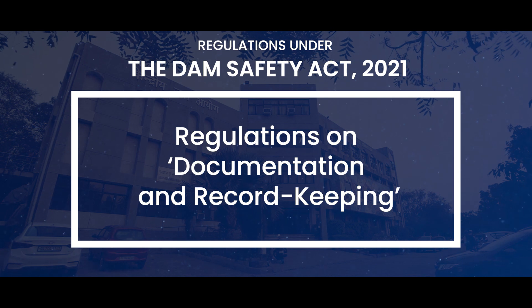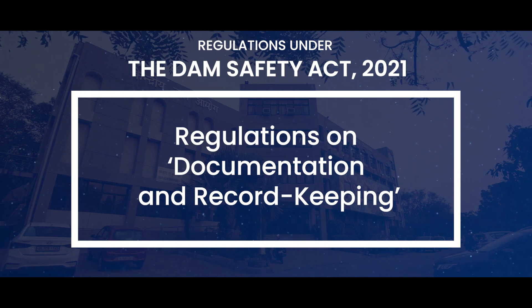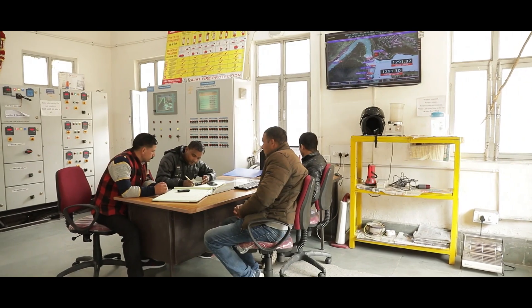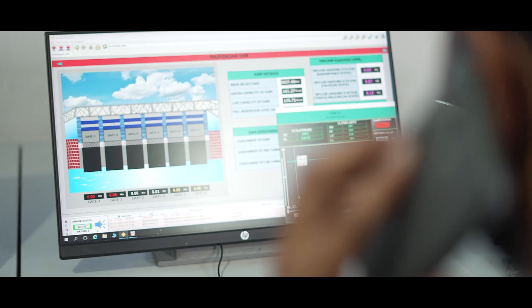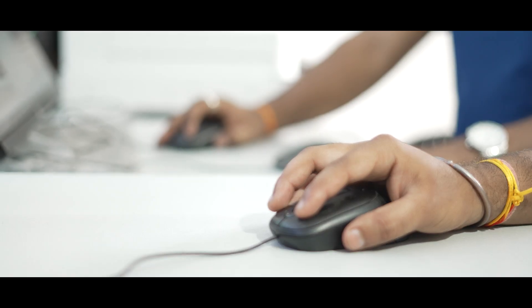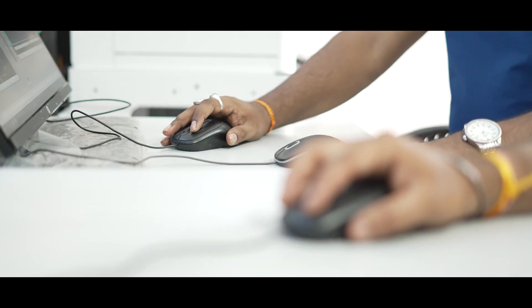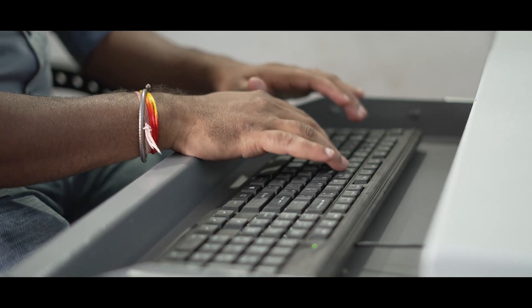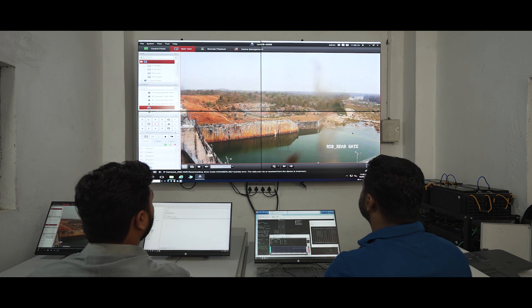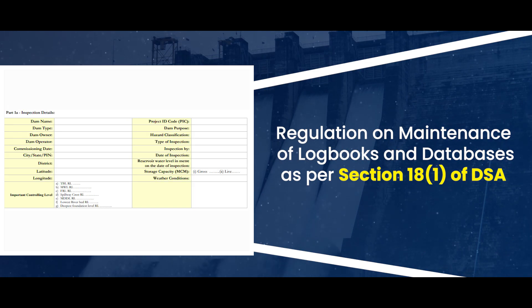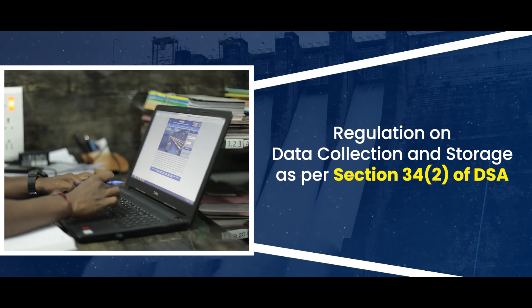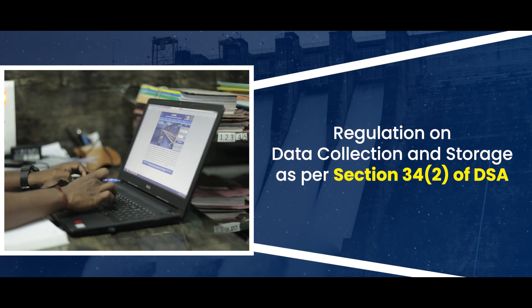Regulations on documentation and record keeping ensure that inspection reports, maintenance logs and safety data are properly recorded, stored and analysed for informed decision making and compliance, covering maintenance of log books and databases and data collection and storage.